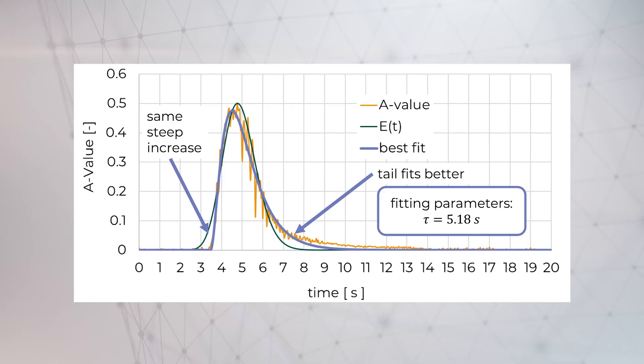To get a better representation of the real behavior, a colleague of mine calculated a fit using an advanced fitting method, and he was able to fit the tail as well as the steep increase. With this method, we ended up with a tau of 5.18 seconds compared to 4.9 seconds, which we had for the continuous stirred tank cascade.